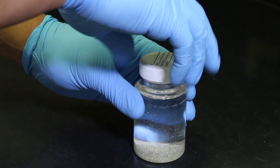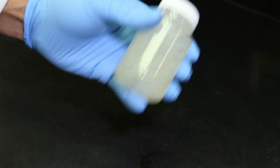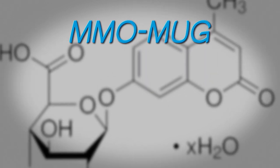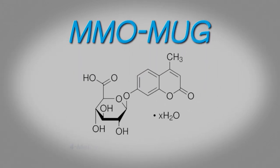The vial is then reclosed, thoroughly shaken, and placed in an incubator. The MMOMUG is a combination of two color indicator chemicals and a food supply for any microorganisms that may be present in the sample.